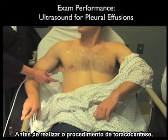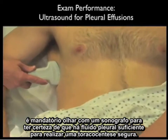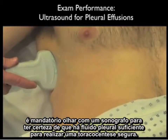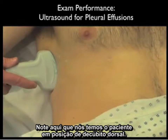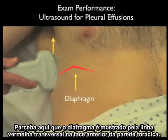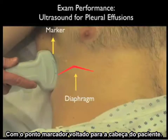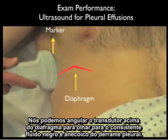Before performance of a thoracentesis procedure, it's mandatory to look with sonography to make sure there's enough pleural fluid amenable for a safe thoracentesis. Notice the patient positioned in an upright position so that the fluid will layer out above the level of the diaphragm. We note the diaphragm as shown by the red line across the patient's anterior chest wall. The probe is positioned along the lateral aspect of the patient's chest with the marker dot towards the patient's head. We can angle the probe above the diaphragm to look for a dark or anechoic collection of fluid consistent with the pleural effusion.